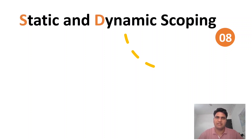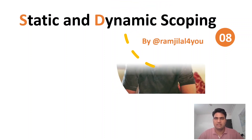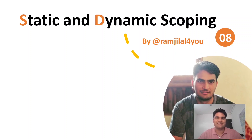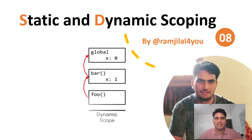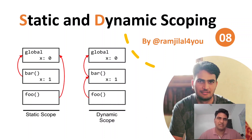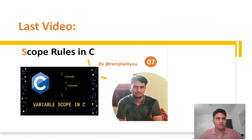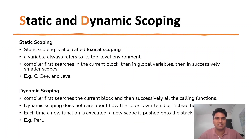Hi everyone, I am your friend Ram and today I am taking a new video in which we will talk about static and dynamic scoping. We will talk about the details of what is static scoping and what is dynamic scoping and how they are used. In the last video, we talked about scoping rules — what is local scope, what is global scope, how to declare, how to define and how to use it. So let's start.